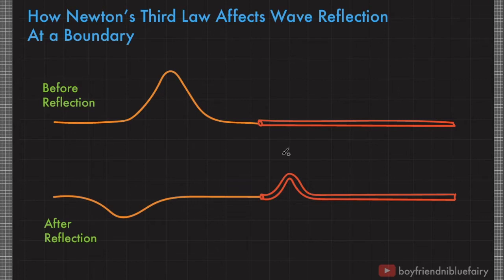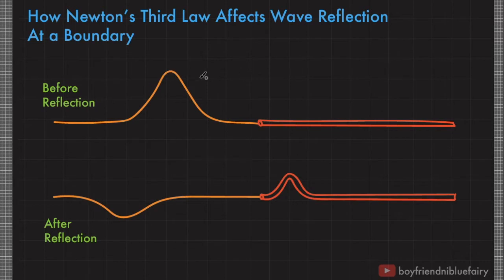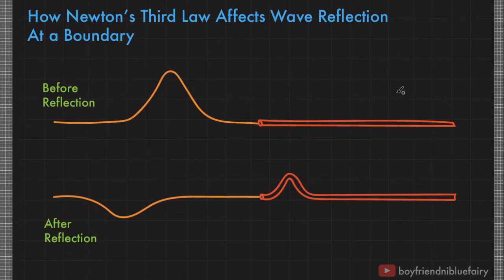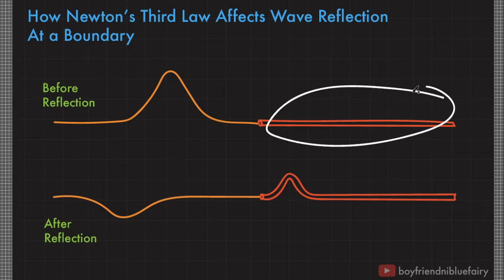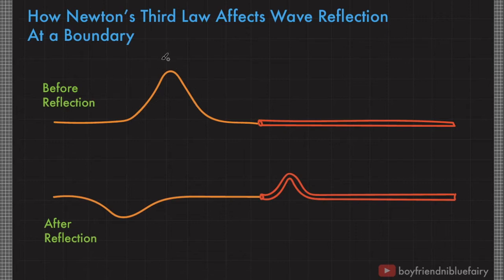Every time a wave encounters a boundary, it is reflected, but its reflection depends on the properties of the second medium. Let's focus our attention first on before reflection. This part of the string has a lower linear mass density than this part of the string.